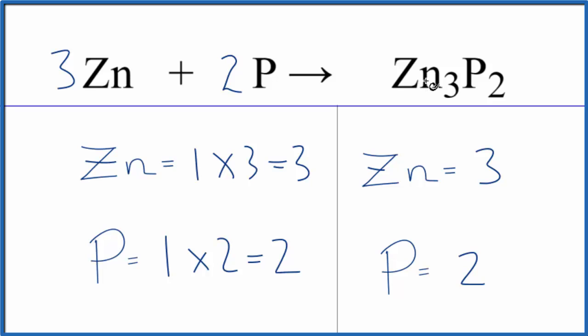These are the correct ratios of the atoms in this equation. This is Dr. B with the balanced equation for Zn plus P yields Zn3P2. Thanks for watching.